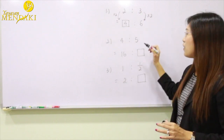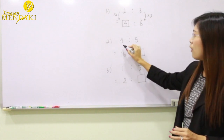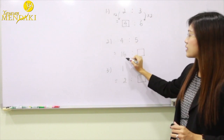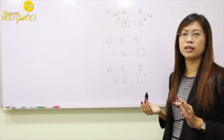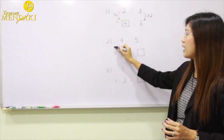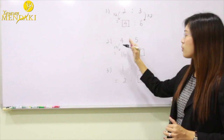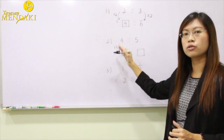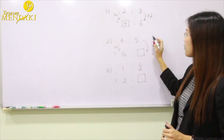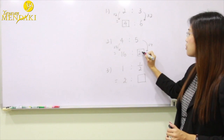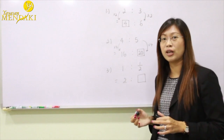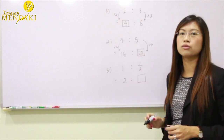Moving on to example two, we have four is to five as a ratio, and we have this 16. To change the four to 16, we multiply by four. When we multiply this side by four, we do the same for the other side: five times four gives us 20. Hence, 16 is to 20 is a new equivalent ratio for four is to five.